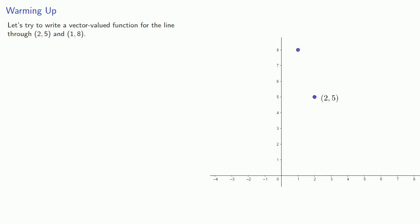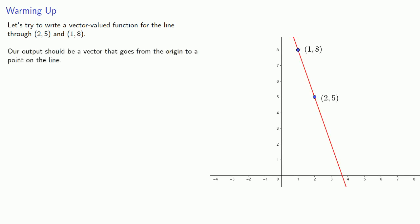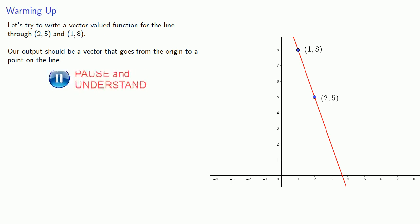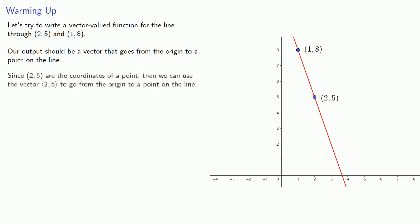For example, let's try to write a vector-valued function for the line through (2, 5) and (1, 8). Our output should be a vector that goes from the origin to a point on the line. Since (2, 5) are the coordinates of a point, we can use the vector (2, 5) to go from the origin to a point on the line.